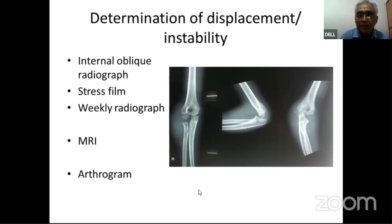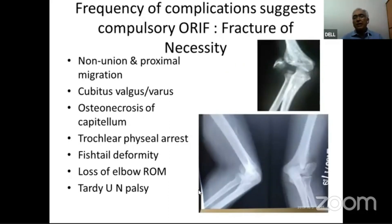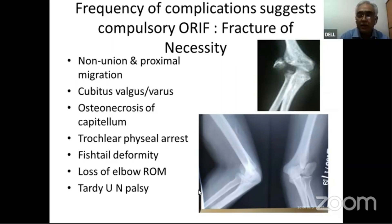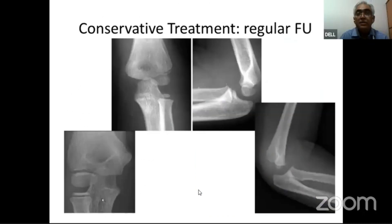Other less commonly used methods to determine displacement or instability include MRI or arthrogram. This fracture is known to produce many complications and was called 'fracture of necessity' by Speed. Complications include non-union with proximal migration of the fragment, cubitus valgus or varus, osteonecrosis of the capitellum, physeal arrest leading to fishtail deformity, loss of elbow range of motion, and tardy ulnar nerve palsy. Because of these complications, these fractures are usually treated surgically.